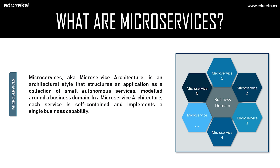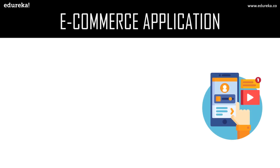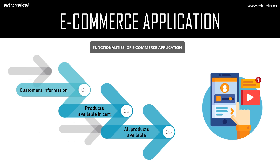Let's take an e-commerce application as our example. Think of Amazon: you see products, add them to your cart, and order them. If you build this using microservices, you can have three main services: Service A for customer information, Service B for products in the cart, and Service C for all products on the website. When a customer orders a product, a composite microservice fetches data from all three services and generates the response for the client.